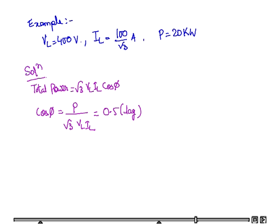We know that total power is root 3 times VL times IL times cos phi. From this, cos phi will be P upon root 3 times VL times IL. P, the total power is 20 kilowatts. VL is 400 volts, IL is 100 upon root 3 amperes. Putting the values in this equation, we find cos phi equals 0.5, which is lagging in nature.